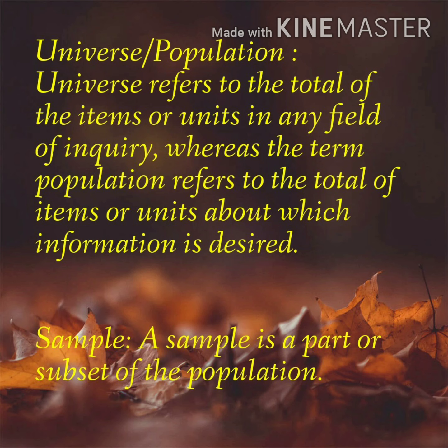The researcher quite often selects only a few items from the universe for his study purpose. This is done on the assumption that the sample data will enable him to estimate the population parameters. Now, the population or universe can be finite or infinite. The population is said to be finite if it consists of a fixed number of elements, so that it is possible to enumerate or measure it in its totality.